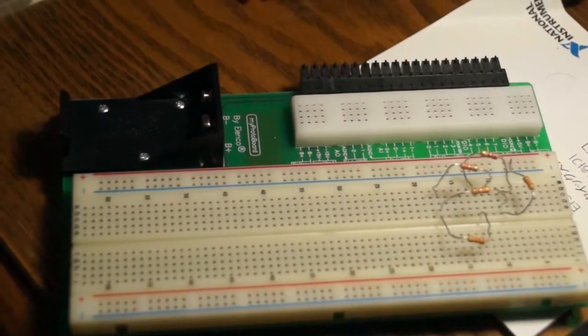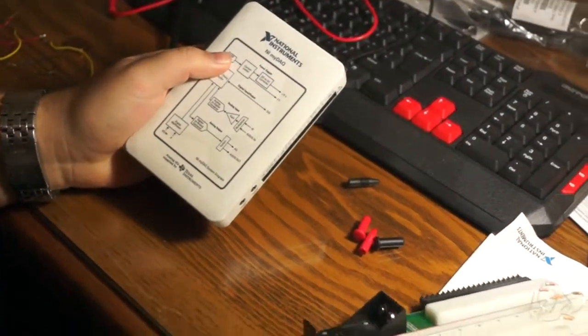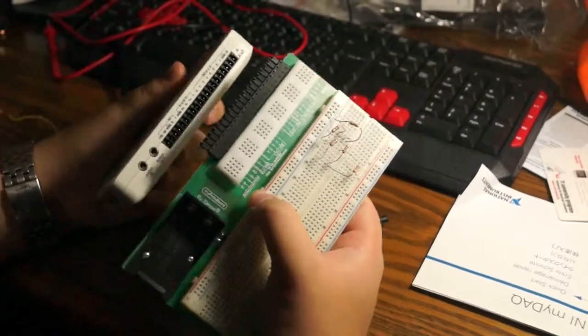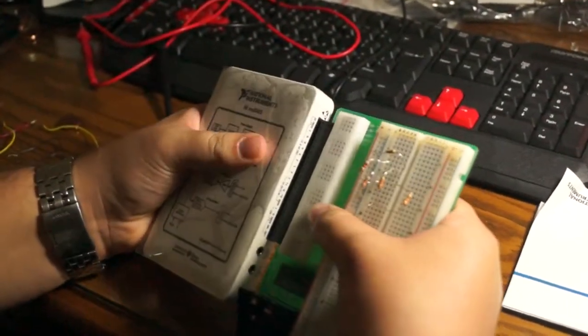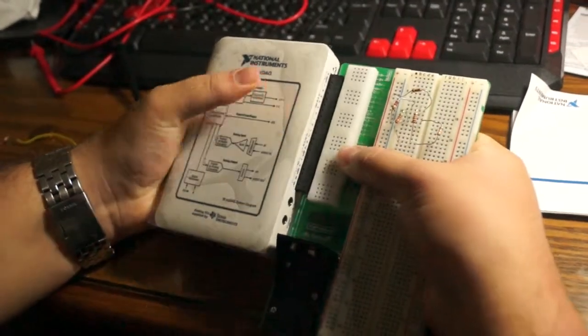For starters, let's talk about how to set up the DAC. You have to take the DAC here and hook it up to the breadboard by pushing these two sides in together. You should be able to hear a click when it goes in. Alright, that's good.